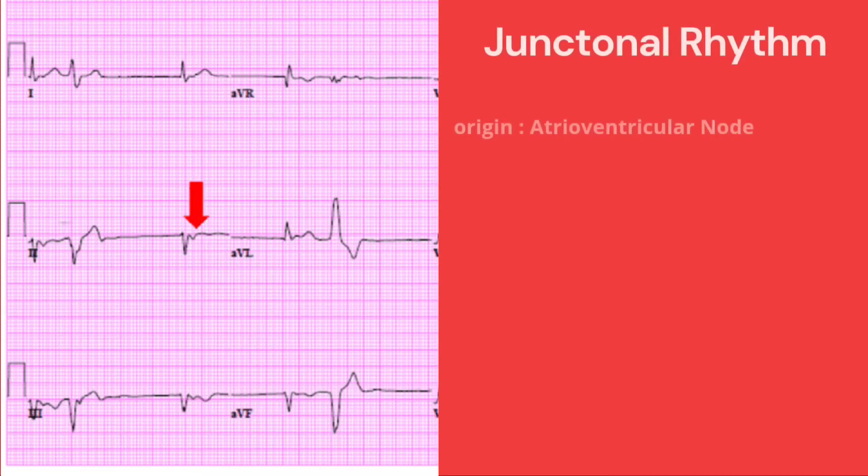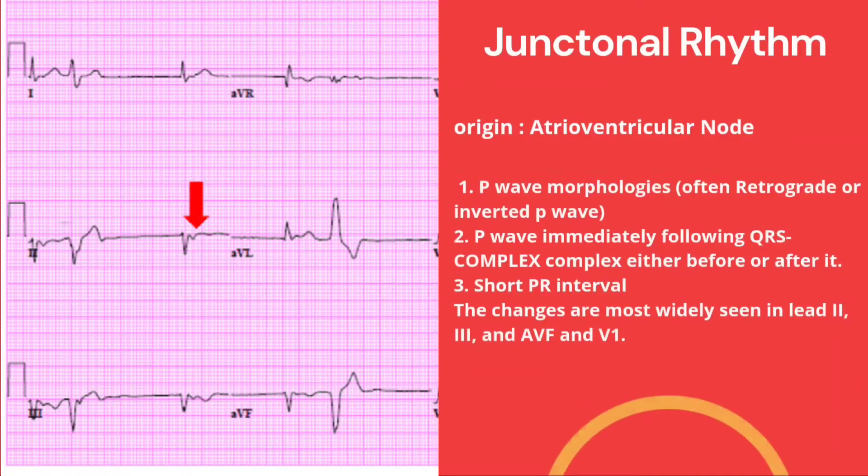The diagnostic criteria for junctional rhythms depend on a few things. First, P wave morphologies that are often retrograde or inverted. Second, P waves immediately following the QRS complex, either before or after it. And third, short PR intervals.